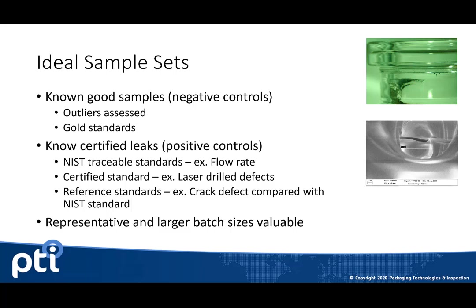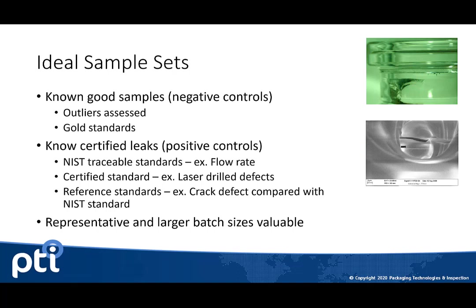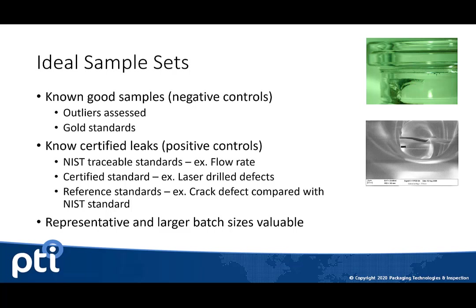The defects used for that experimental design may be NIST traceable standards, such as a flow meter, as one type of defect. We may also use laser drill defects, which would be a certified leak size. These are ways to really control the type of defect you're introducing into the test so you can better control those test results and understand them better. Another approach is to create a crack defect, but those are far more dynamic, and you then have to reference that against another standard, such as that NIST flow meter.